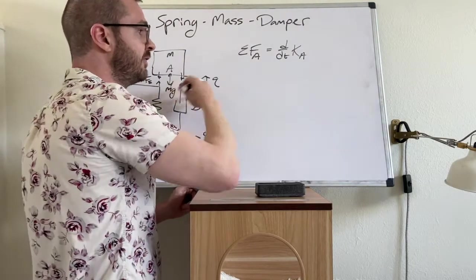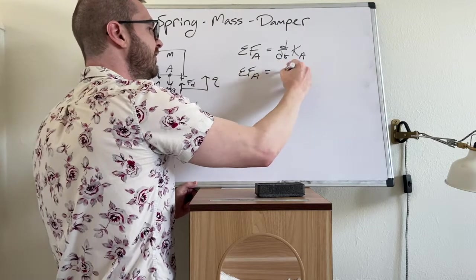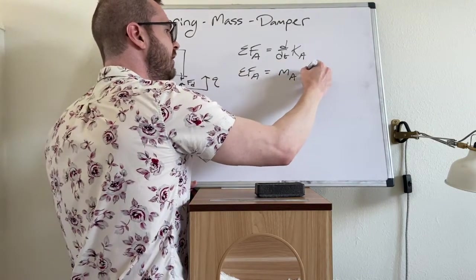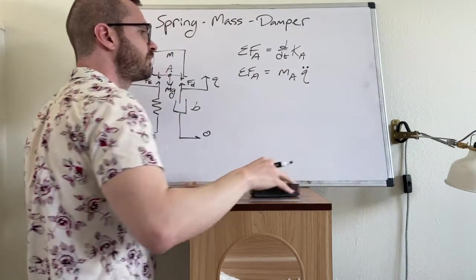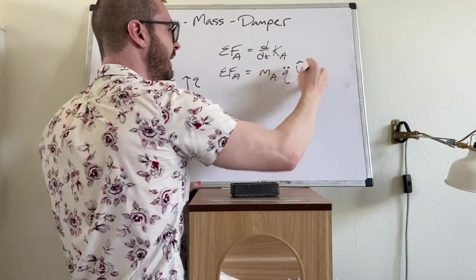So the sum of forces on A is equal to M A Q double dot. And this is vector. So Y N. Now, where did this Q double dot come from? Again, we had P N A is equal to Q Y hat N. Take the second derivative of that. So Q double dot.